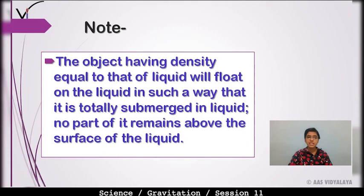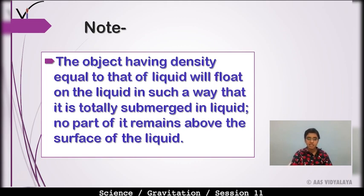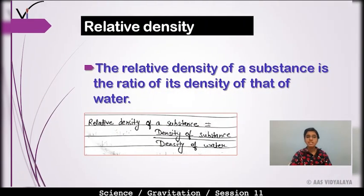Note: An object having density equal to that of the liquid will float on the liquid in such a way that it is totally submerged in the liquid — no part of it remains above the surface of the liquid. Yani woh float to kar raha hai, lekin uska koi bhi remaining part aapko liquid ke surface ke upar nahi dikhega.